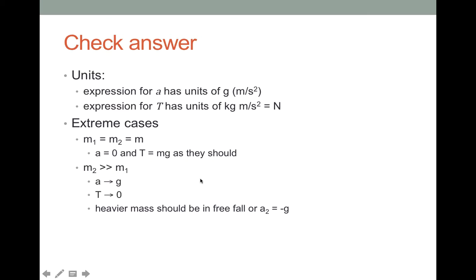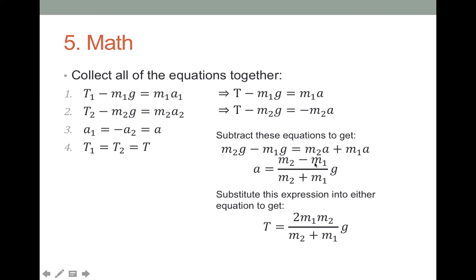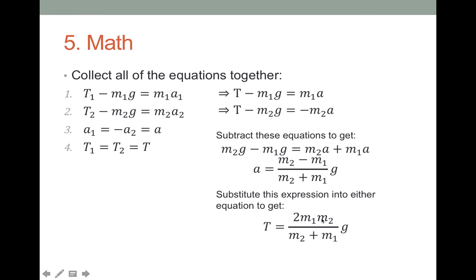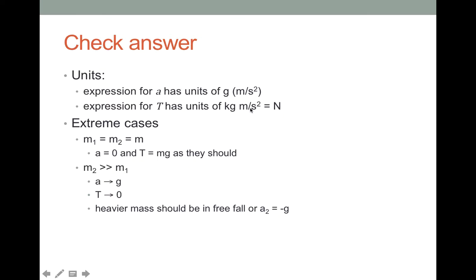Finally, we want to consider whether we got the answer correct, or at least whether it's plausible. First, do our expressions have the correct units? Acceleration should have units of meters per second squared. Here we have masses divided by masses, so the kilograms cancel out, and the acceleration has the same units as g — meters per second squared. For tension, it's the product of two masses divided by a sum of masses, so one kilogram cancels out, leaving kilograms times meters per second squared, which is newtons. Both expressions have the correct units.